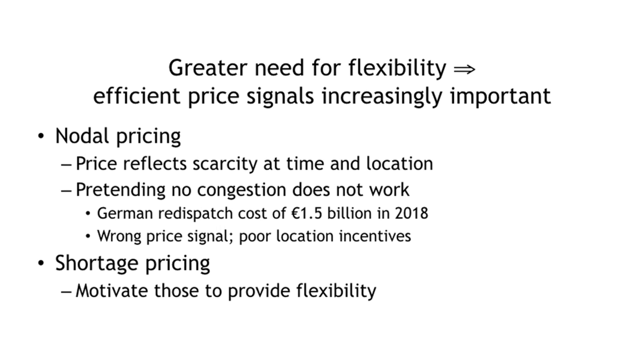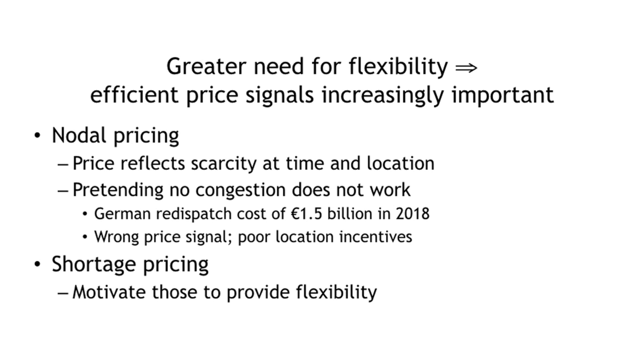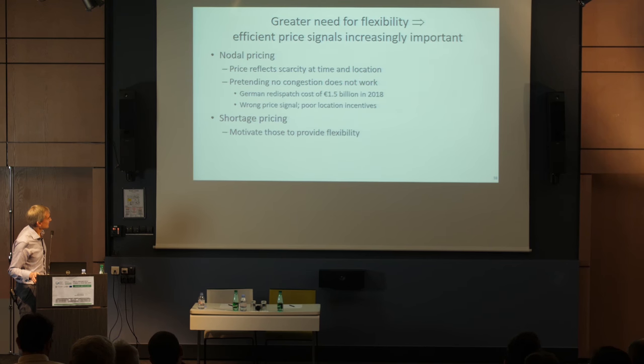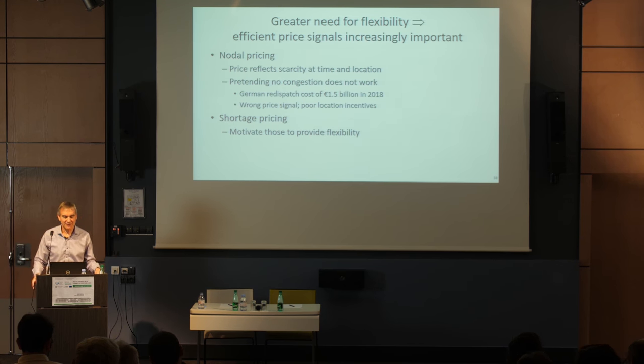We are going to have more and more locational issues, so the benefits of nodal pricing are going to be stronger than ever. As soon as you have this intermittency, it can happen in fairly strange ways — and that's why there will be more benefits from nodal pricing. Nodal pricing works quite well. My view is that pretending there's no congestion just doesn't work. Germany is a very good example: there's one German price, and given the large introduction of wind in the north and load in the south with insufficient transmission, redispatch costs were 1.5 billion euros last year. That's serious money.